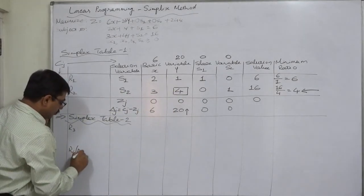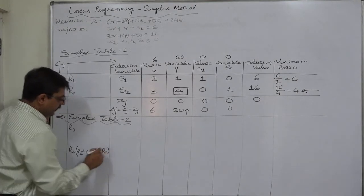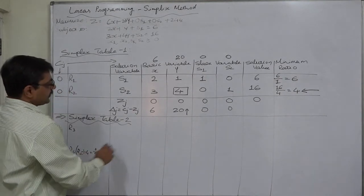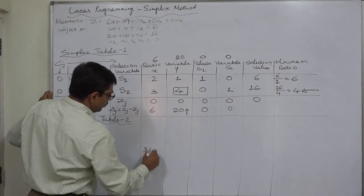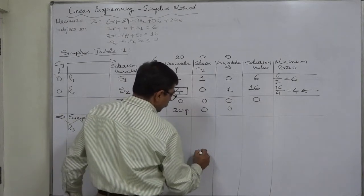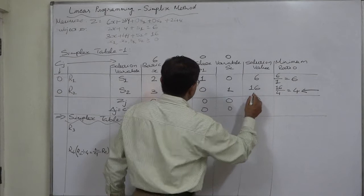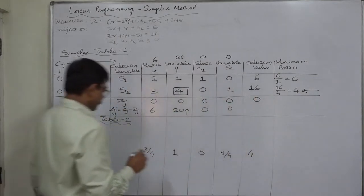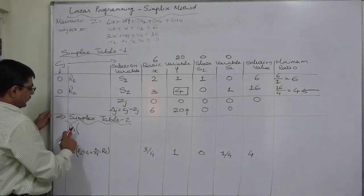That will be our r4: 3 divided by 4, that is 3/4; 4 divided by 4 is 1; 0 divided by 4 is 0; 1 divided by 4 is 1/4; 16 divided by 4 is 4. So this is our r4. Now we can write r3.